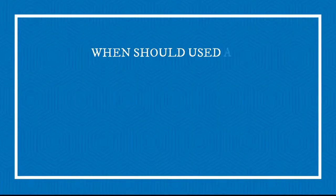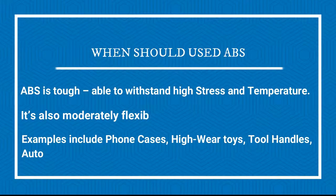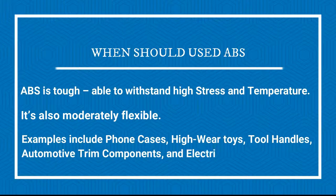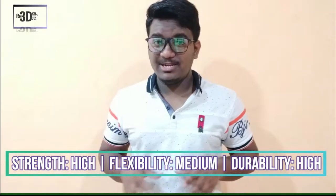Moving to the next filament in the common category: ABS, Acrylonitrile Butadiene Styrene — the most popular 3D printer filament after PLA. ABS is actually moderately superior to PLA despite being slightly more difficult to print with. ABS is tough — it is able to withstand high stress and temperature and is also moderately flexible. Examples include phone cases, high-wear toys, tool handles, automotive trim components and electrical enclosures. It has high strength with medium flexibility and high durability.